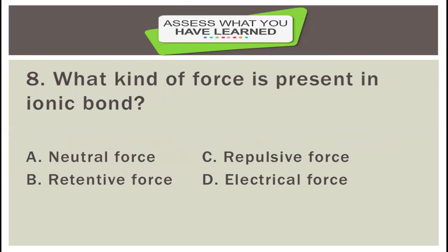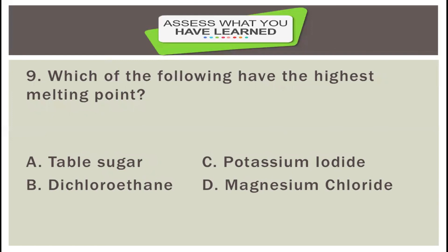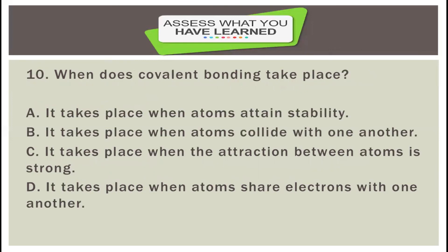Number eight: what kind of force is present in ionic bonds? A: neutral; B: retentive force; C: repulsive force; D: electrical force. Number nine: which of the following has the highest melting point? A: table sugar; B: dichloroethane; C: potassium iodide; D: magnesium chloride. Number ten: when does covalent bonding take place? A: when atoms attain instability; B: when atoms collide with one another; C: when the attraction between atoms is strong; D: when atoms share electrons with one another.